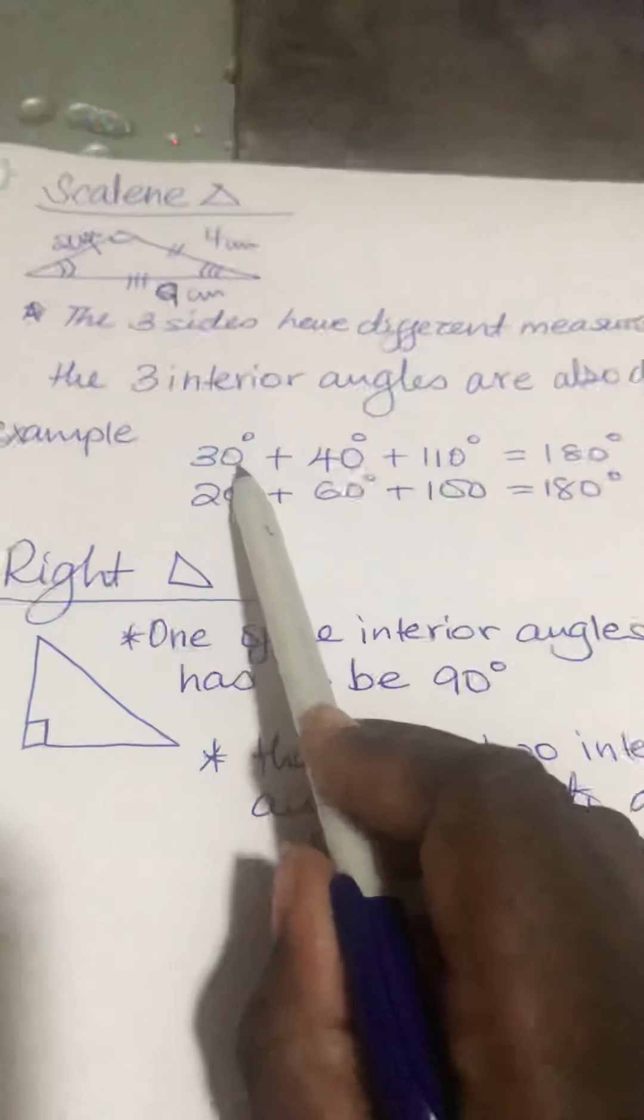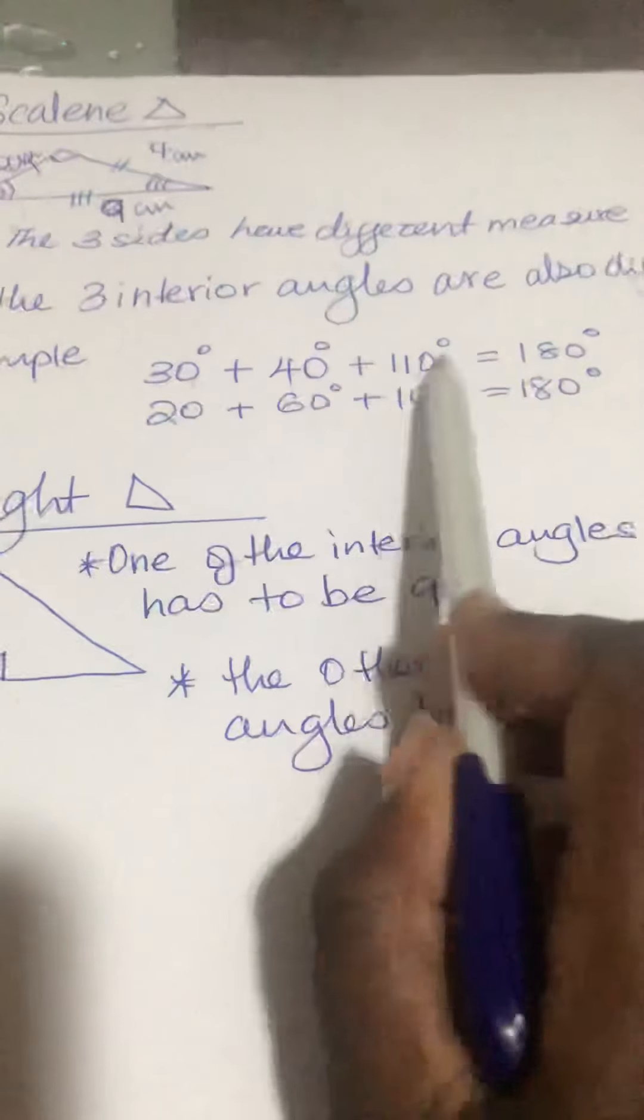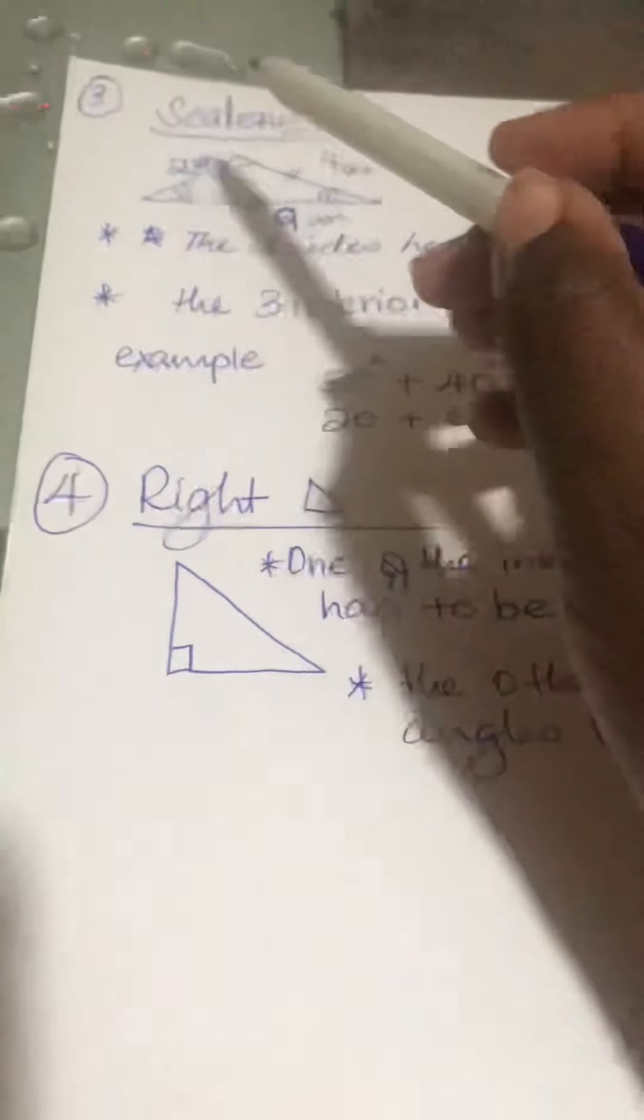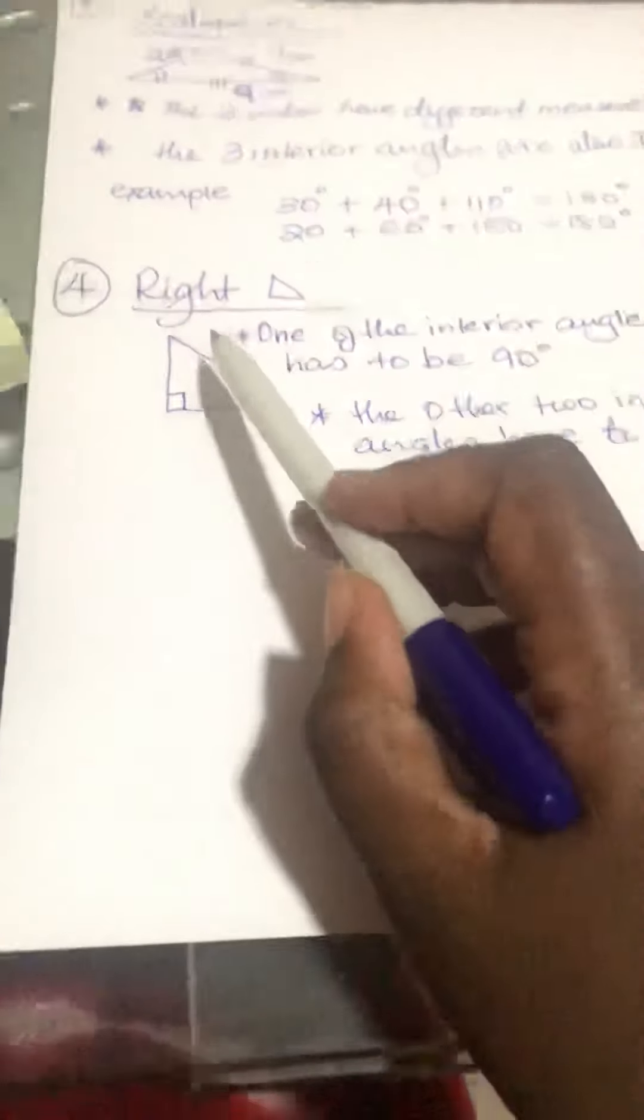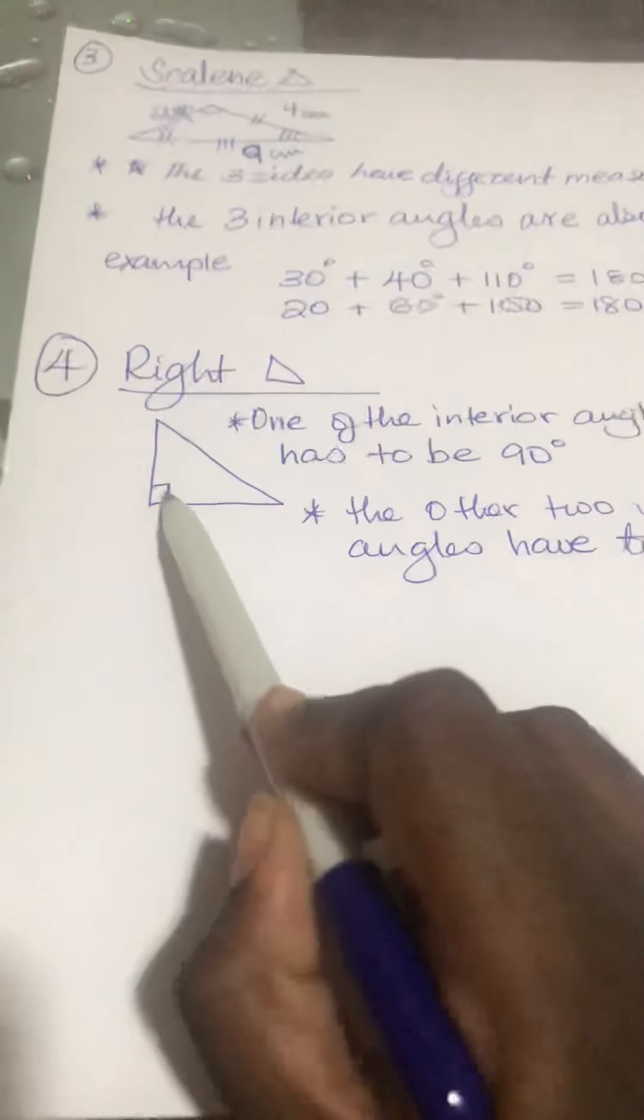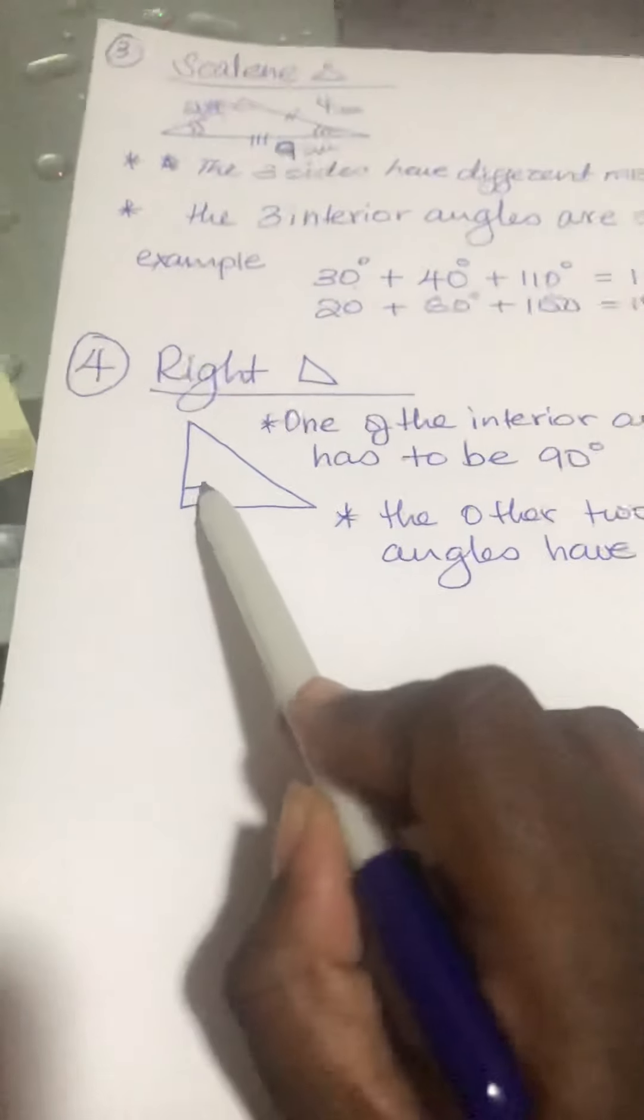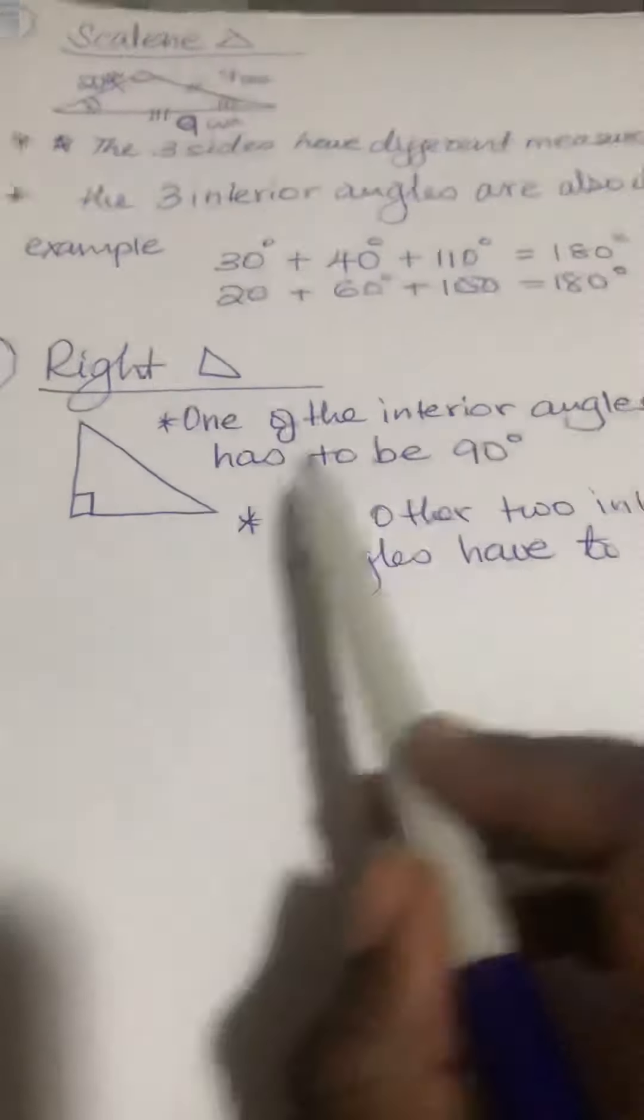You can have 30, 40, 110. How do you know? Because if you add them you get 180. So when you add these three angles you should get 180. Now let's look at the right triangle. In the right triangle, one of the interior angles has to be 90 degrees. They will either tell you in words or they will tell you by the picture.